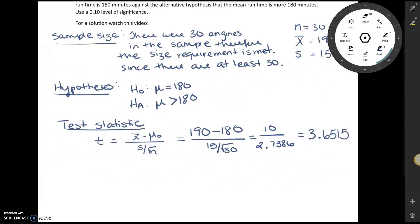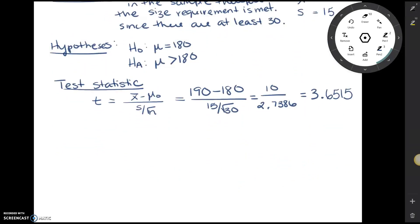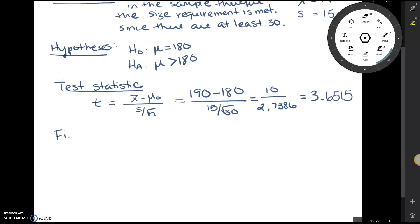Alright, so now we're going to find our p value. Drawing our picture, we're going to just draw a t distribution. Our t's are always centered at zero. So this is a t distribution. There were 30 engines in the sample, so we're going to have 29 degrees of freedom. Notice this is a right tail test. My test statistic here is 3.6515, and I need the area in the right tail.